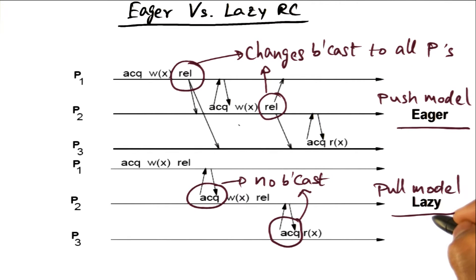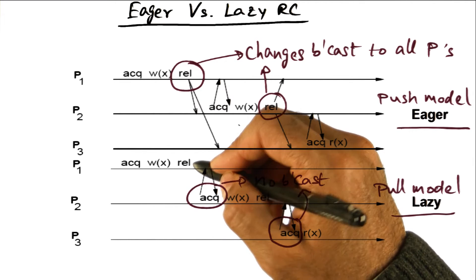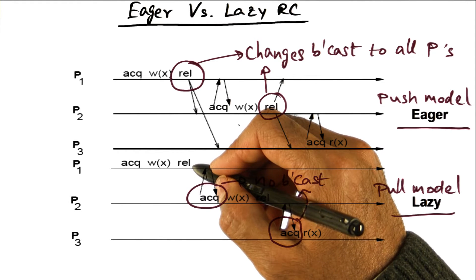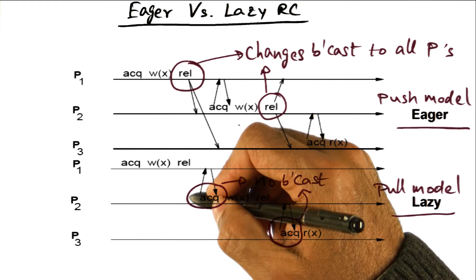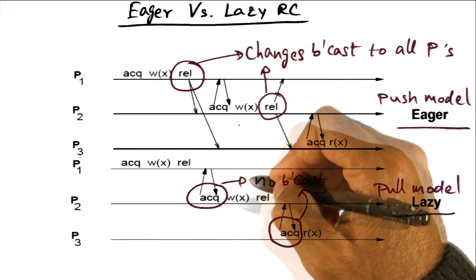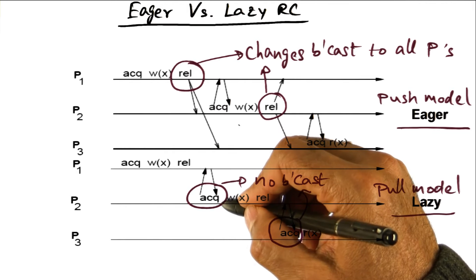Now let's move over to the lazy version. In the lazy version, what we are doing is, when we release the lock, we are not doing any global communication. We simply release a lock. Later on, the next process that happens to acquire that same lock, the RC memory model, the first thing it's going to say is, oh, you want to get this lock?